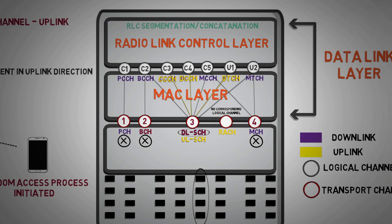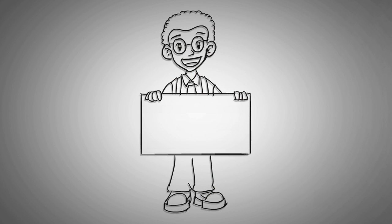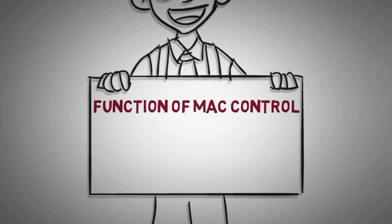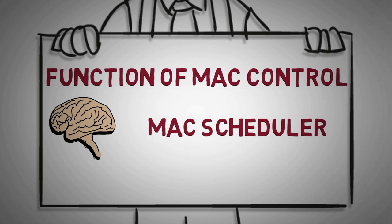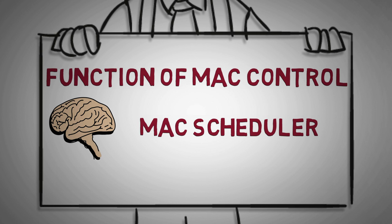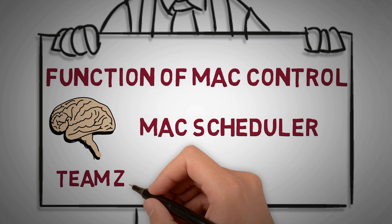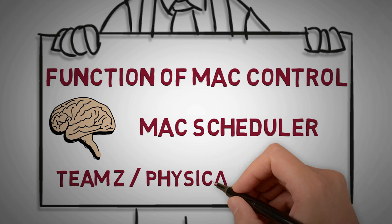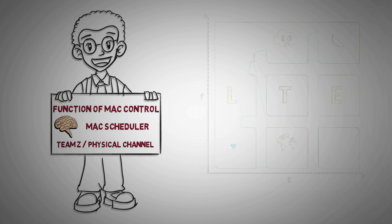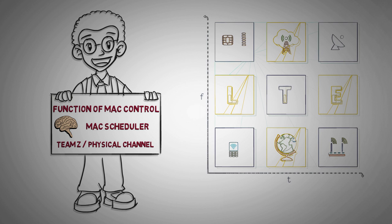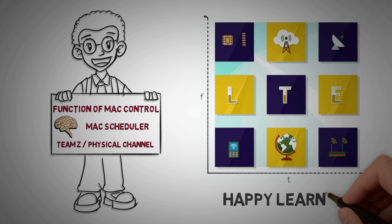So friends, we have seen how data are sorted and mapped into various transport channels. In our next video we will discuss the function of MAC control and the brain behind all these operation which is MAC scheduler module. We will also discuss the functioning of Team Z or the physical channels which actually transports the data. You can comment your doubts or suggestions and subscribe to our channel to stay updated. Happy learning!